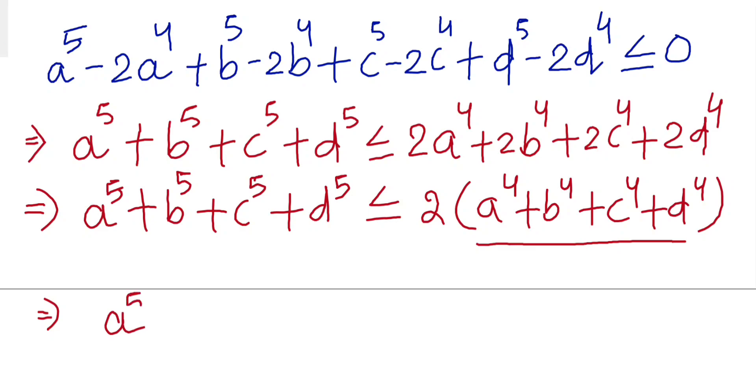we will get a⁵ plus b⁵ plus c⁵ plus d⁵ is less than or equal to 32. Hence proved.